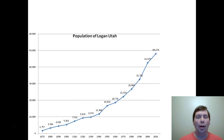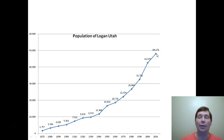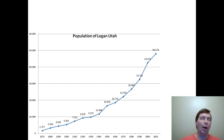We've talked about two of the three main characteristics of a population. Now it's time to talk about the third: what's happening to its size — is it growing, shrinking, or staying the same? Here is the population history of Logan going back to 1870, when the population was 1,757 people. In 1980 it was 26,000, and in 2010 it was 48,000 — in one lifetime the population nearly doubled. When we look at a population we ask: is it growing, shrinking, or staying the same, and why?